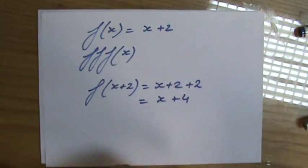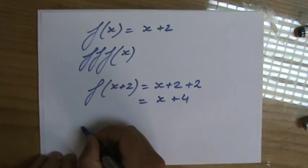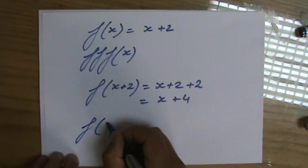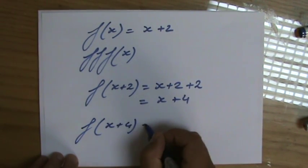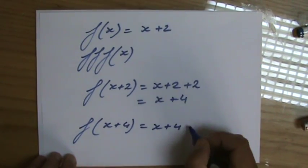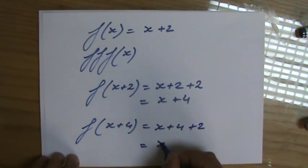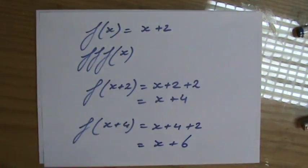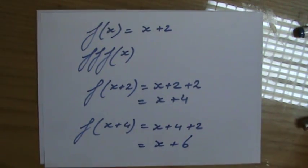And then I have to substitute in the function f again. So f(x + 4), which is going to be x + 4 + 2. The answer will be x + 6. All right, those were composite functions.